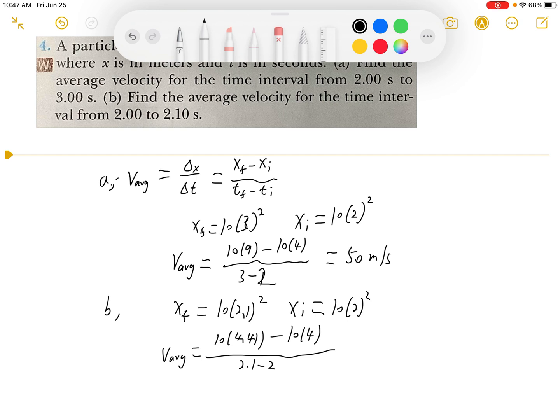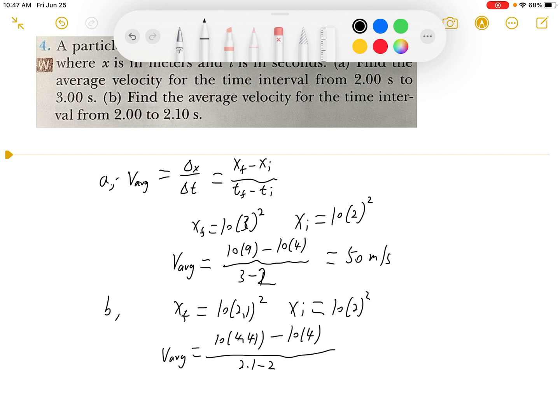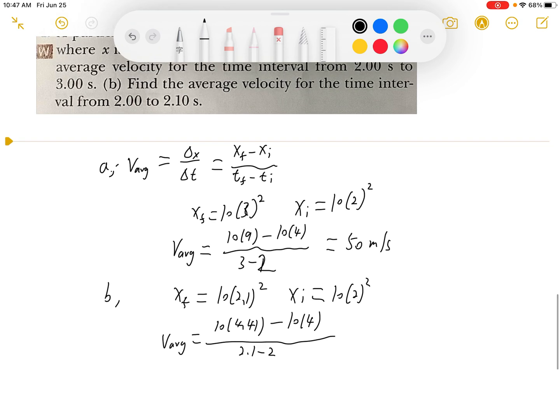Yeah, 3 minus 2. And here is 2.1 minus 2. So we will have a final answer which is 41 meters per second for part B.